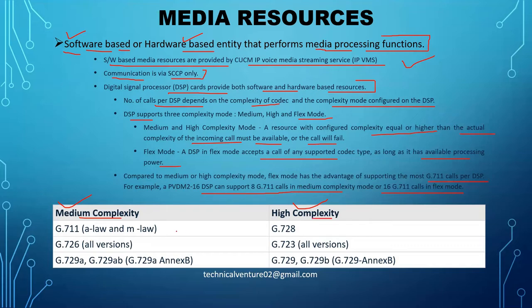Medium complexity codecs include G.711 A-law, G.711 mu-law, G.726 all versions, G.729A, G.729B, G.729AB, G.729AnnexA — everything. These are the medium complexity codecs. For high complexity modes, we have G.728, G.723, G.729, and G.729B. So that covers the medium complexity, high complexity, and the flexible mode complexity.